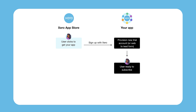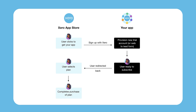Your app would carry out any usual onboarding journey with Jess, or lead them through a trial period. Eventually there will be a point when they are ready to subscribe and purchase a plan. Your app would have a subscription flow that points Jess to purchase via App Store subscriptions. Jess would continue through Xero's UI to select and purchase a plan for your app, and once complete, we redirect Jess back to your app.